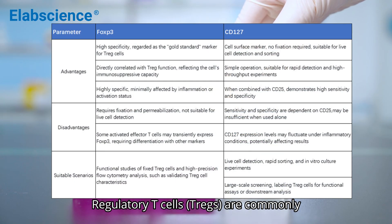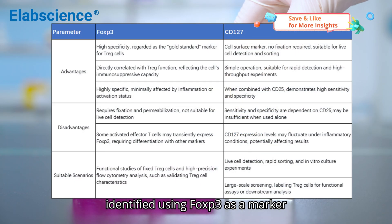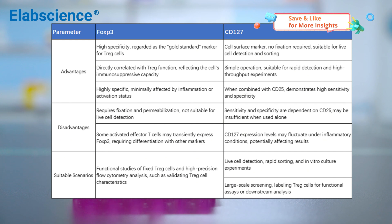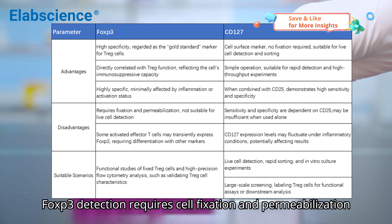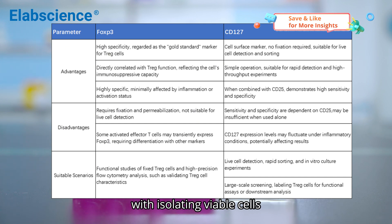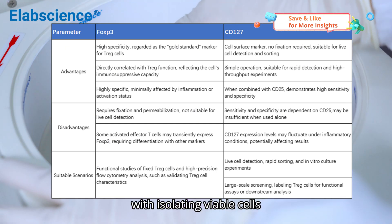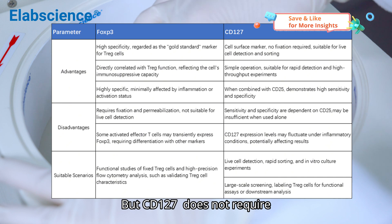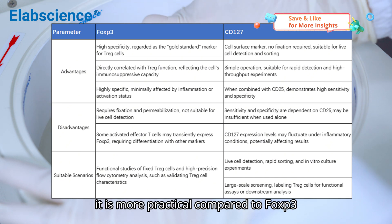Regulatory T-cells are commonly identified using FOXP3 as a marker. However, FOXP3 detection requires cell fixation and permeabilization, which are labor-intensive and incompatible with isolating viable cells. But CD127 does not require this, making it more practical compared to FOXP3.